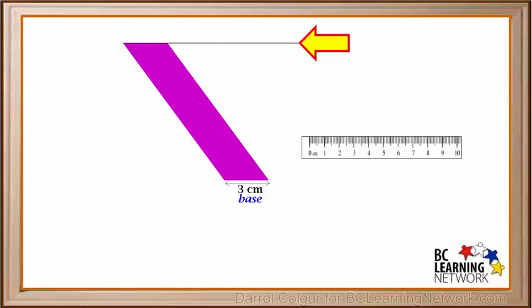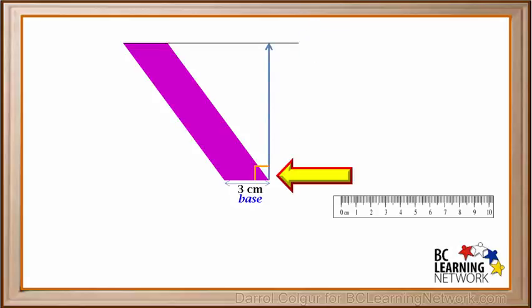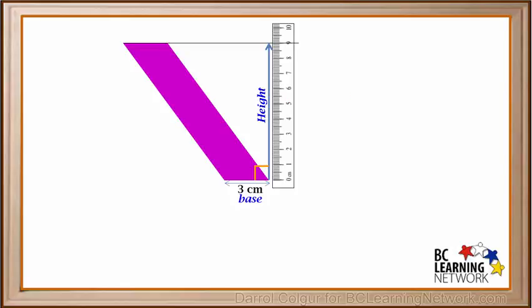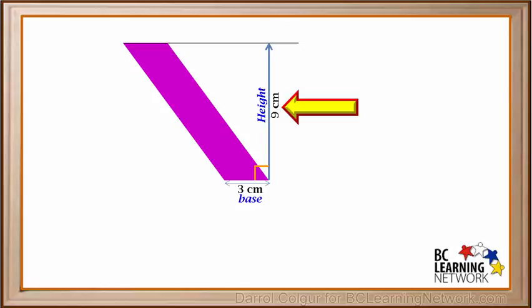What we do is draw a straight line through the top and extend it to the right. This line shows where the top of the parallelogram is. Next, we draw a straight line from the base to the line marking the top. This must be at right angles to the base. The length of this line is the height of this parallelogram. We use the ruler to measure the height, and it's 9 cm. So we can mark the height as 9 cm.